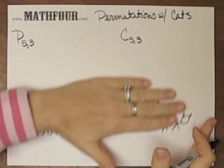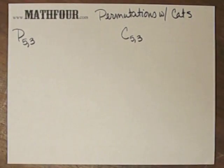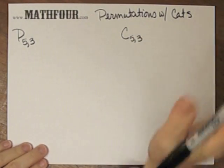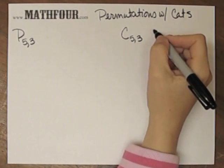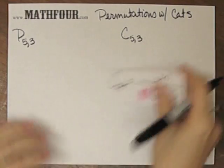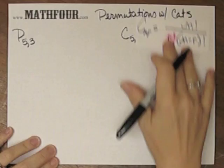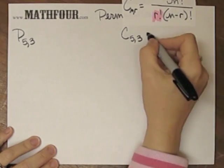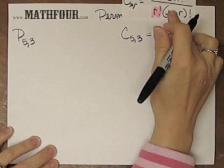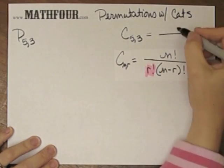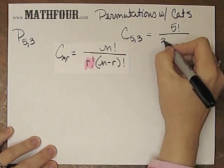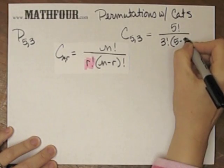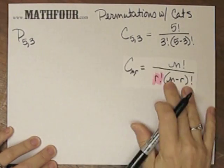How we did this was we said that we could take five cats and pick three to do something with, maybe come home with me. This would be our formula: five factorial over three factorial, and then five minus three factorial. That's our formula.